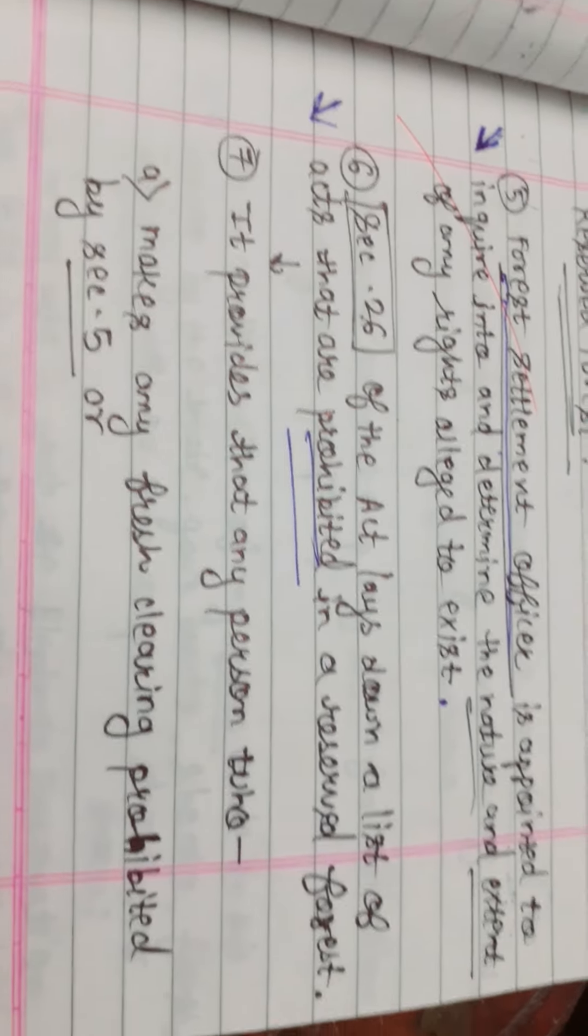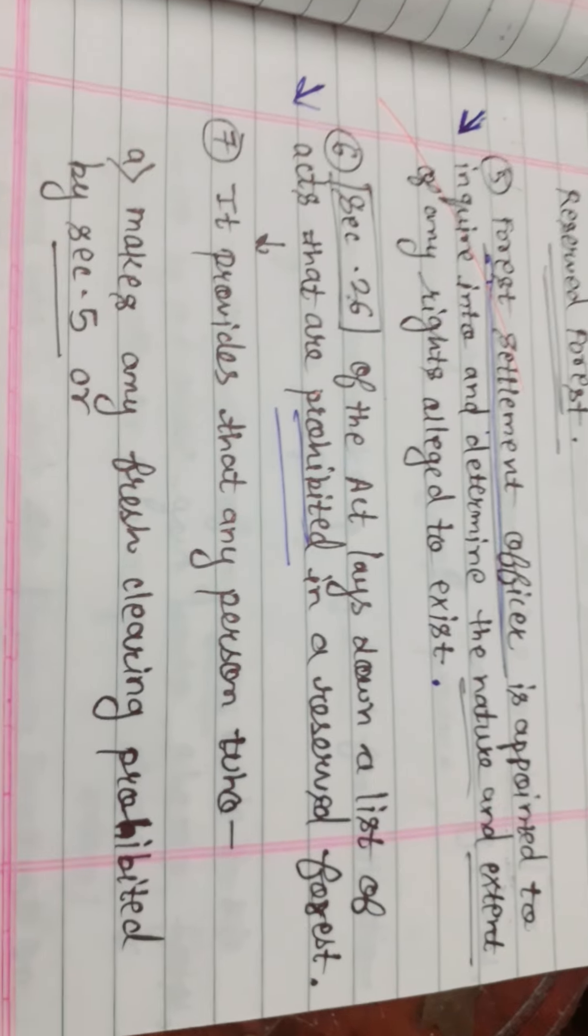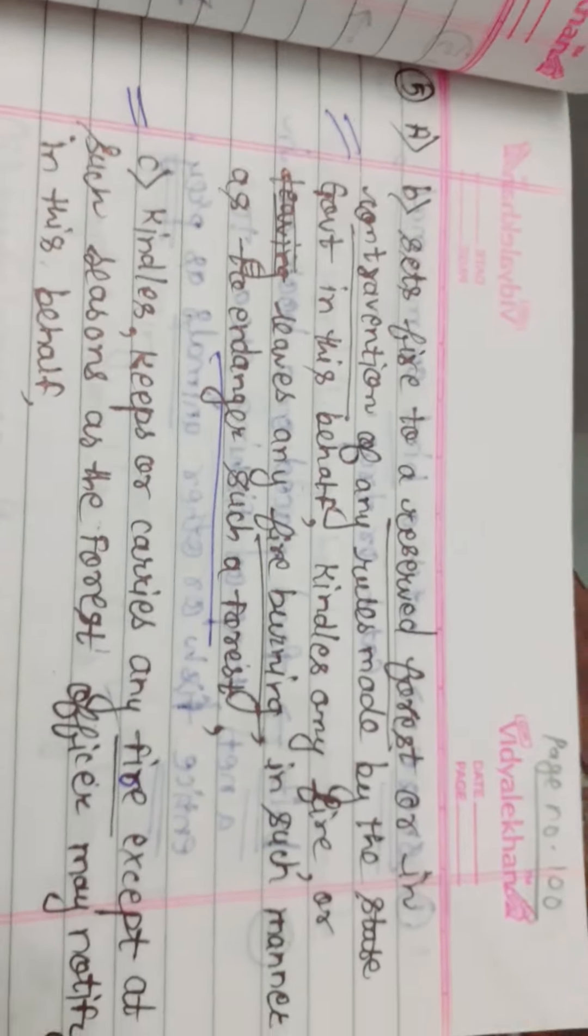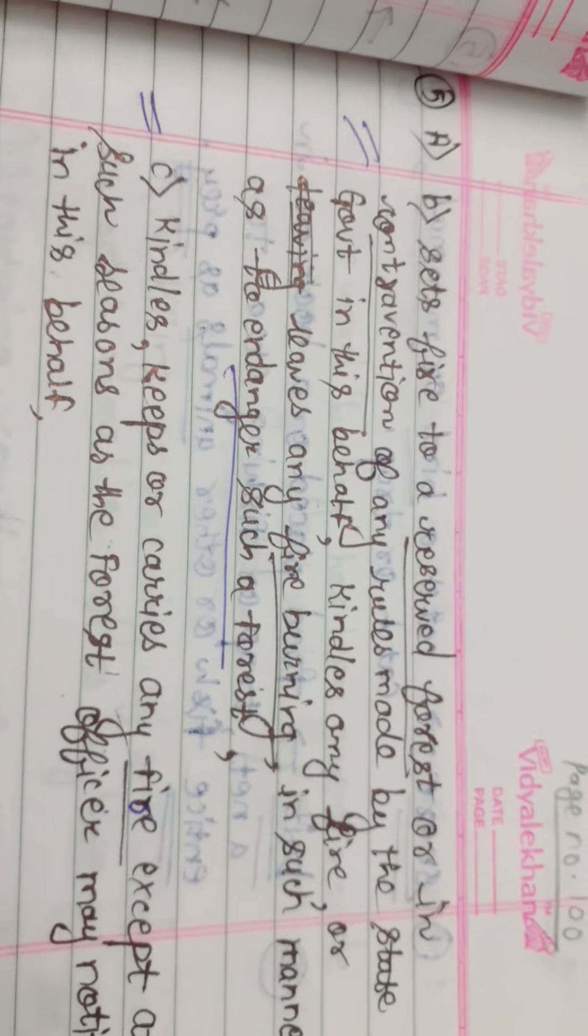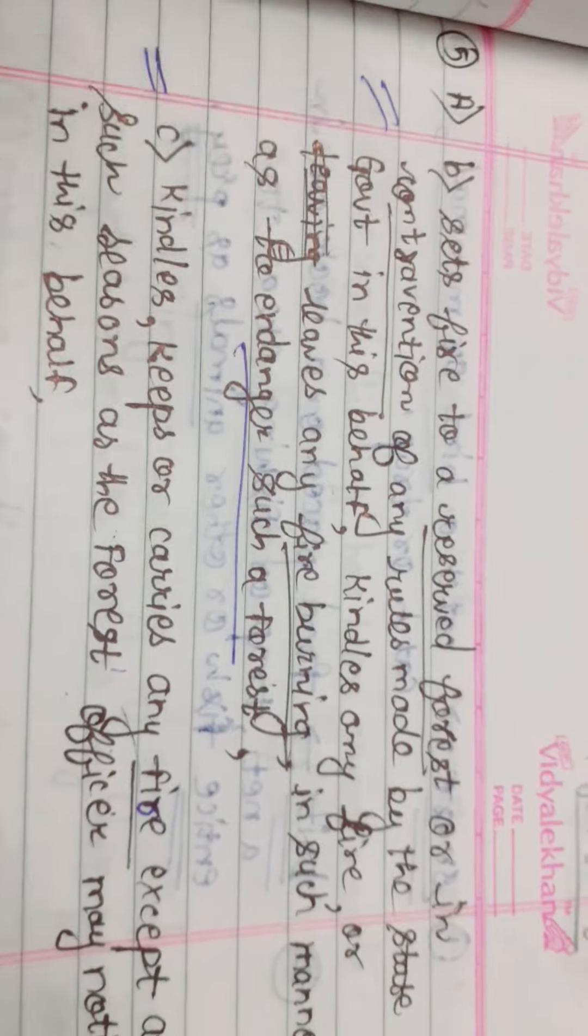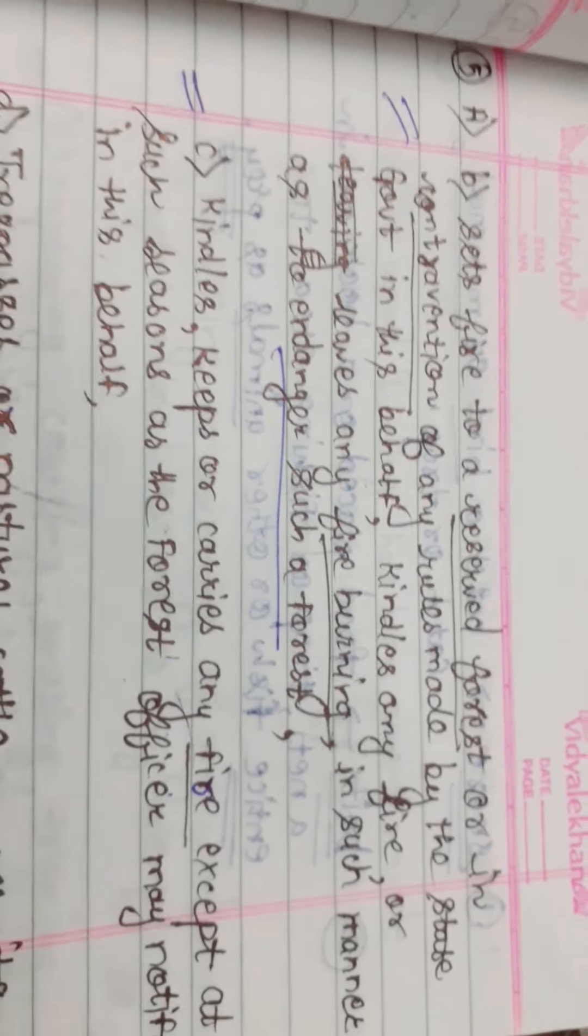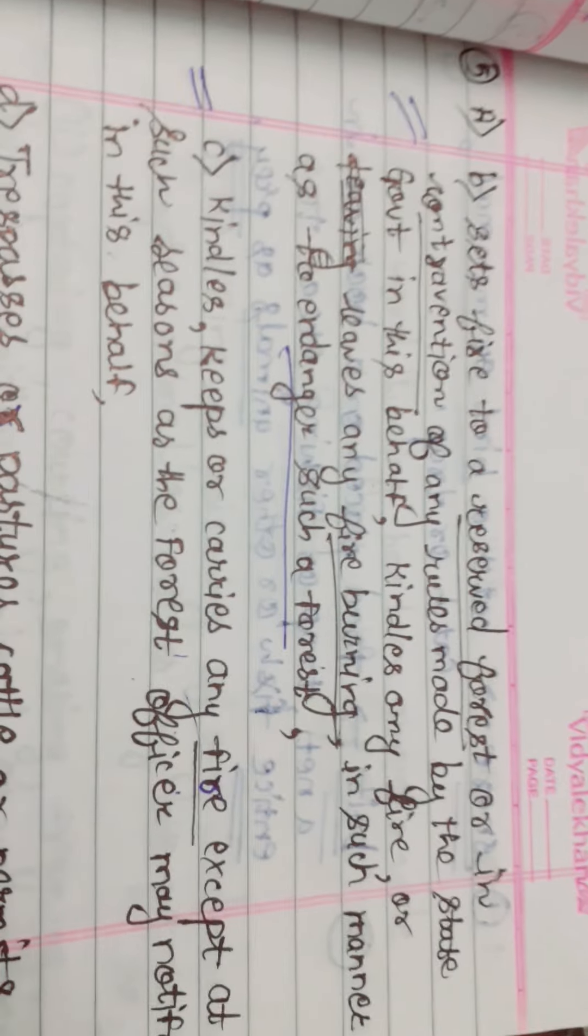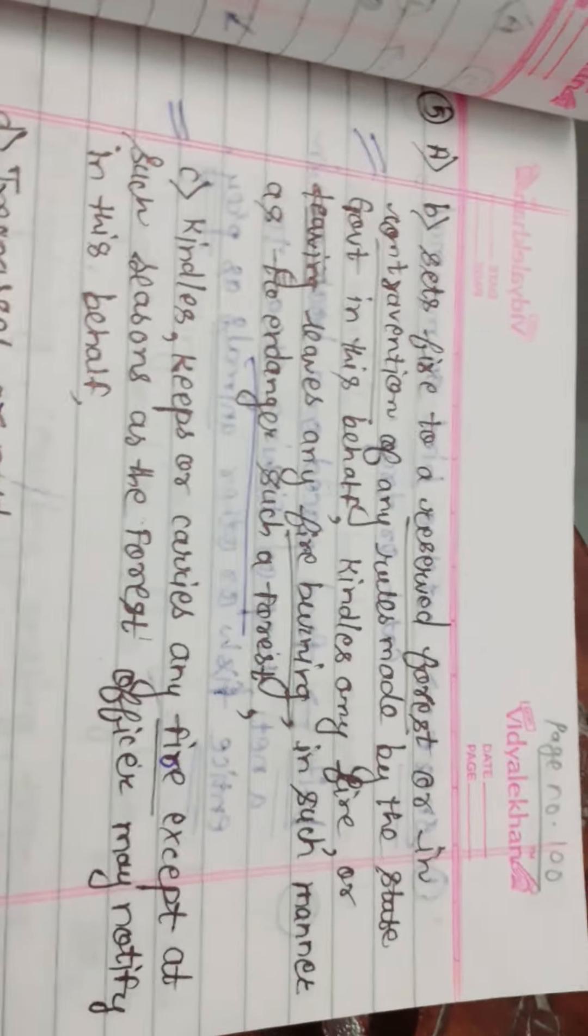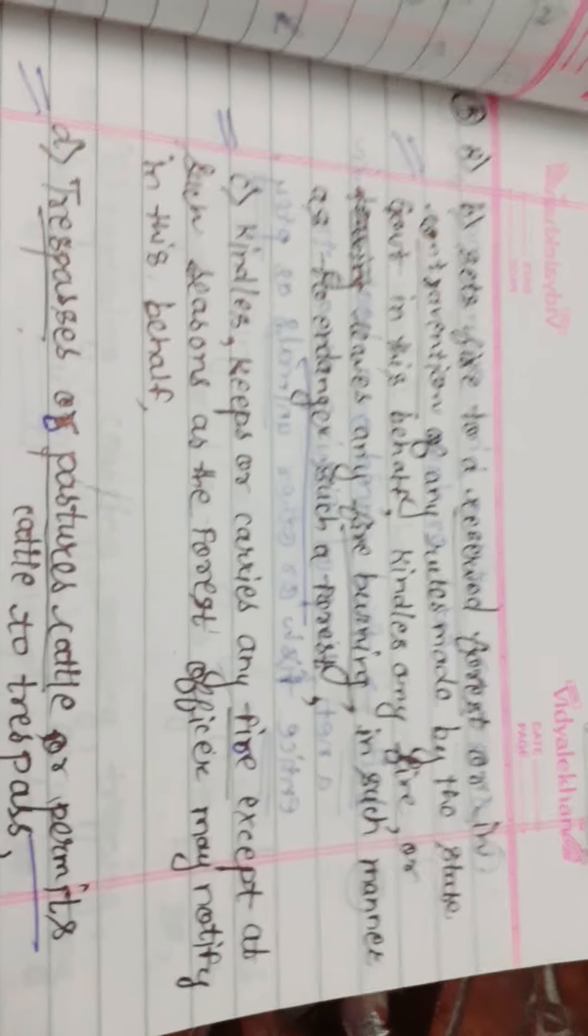First, it provides that any person who makes any fresh clearing prohibited by Section 5 or sets fire to the reserve forest or in contravention of any rules made by the state government, kindles any fire or leaves any fire burning in such manner as to endanger such a forest, or kindles, keeps or carries any fire except at such seasons as the forest officer may notify.